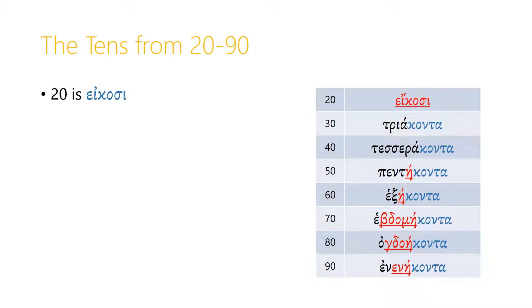20 is quite irregular. It's eikosi. You can imagine if you reconstruct it how we end up with that form, but it's probably easier just to memorize it as eikosi.